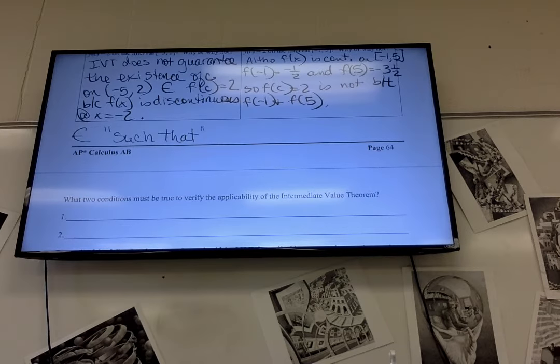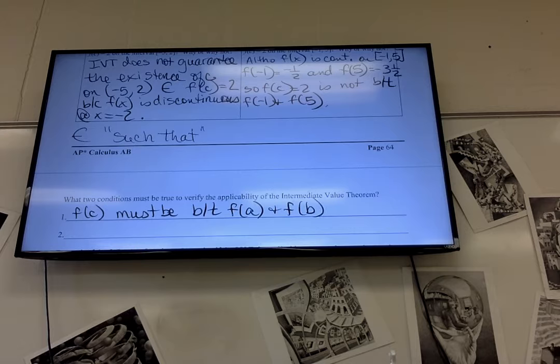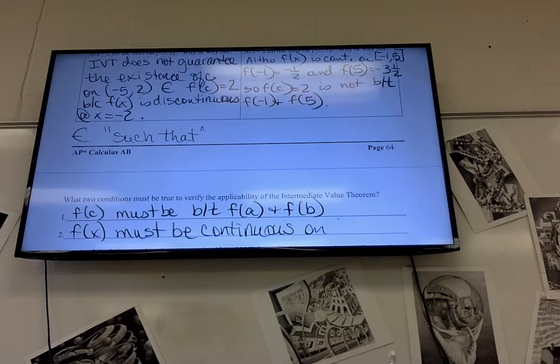What two conditions must be true to verify the applicability of the IVT? There has to be a C between what? F of A and F of B. Yes. So F of C must be between F of A and F of B. What else has to be true? Continuous. F of X must be continuous on A to B.